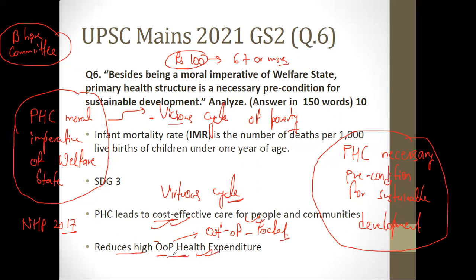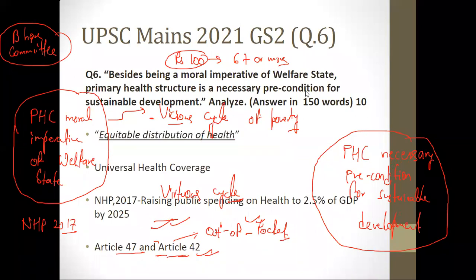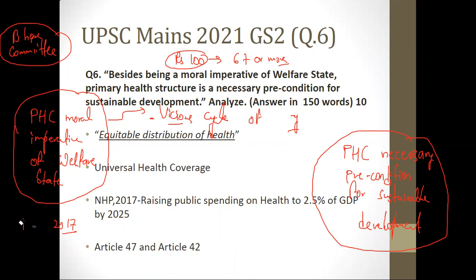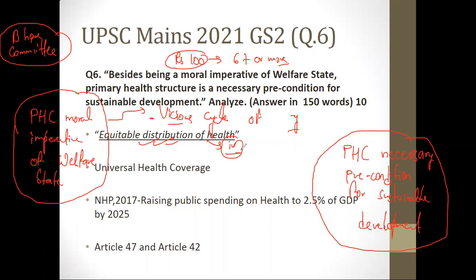The third point for moral imperative of welfare state is Article 47 and Article 42. Article 47 states it is the duty of the state to improve public health; Article 42 talks about maternity relief. These create constitutional obligations on the state to provide accessible primary health structure. You can reference these DPSP articles in your answer.